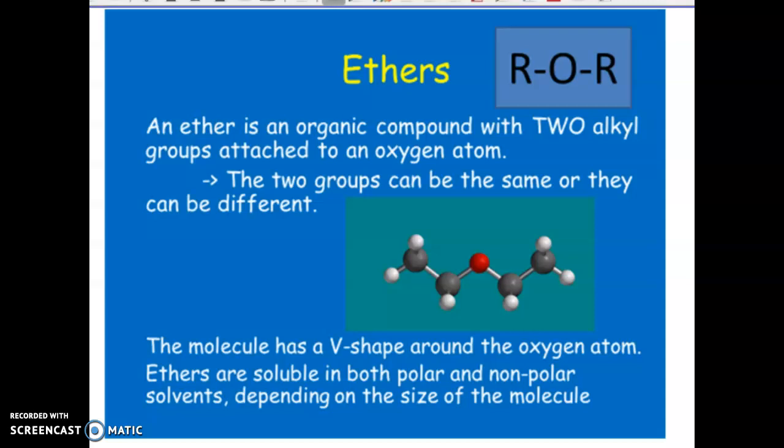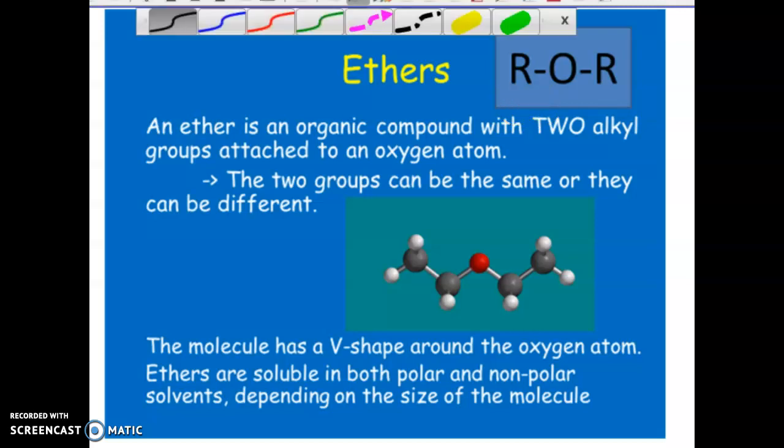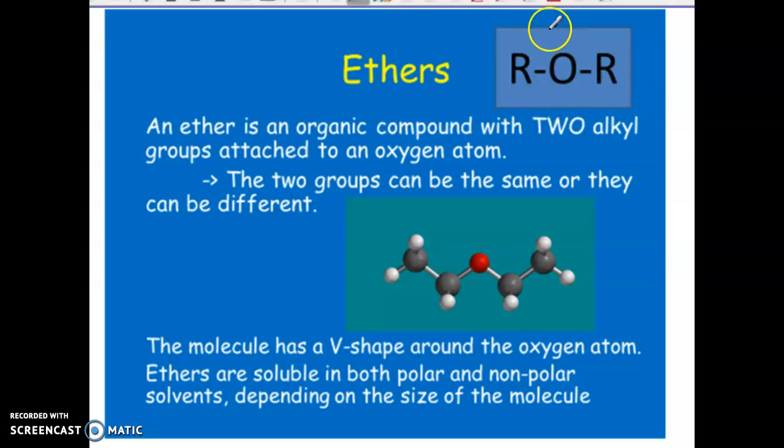Looking at ethers. Ethers is a functional group where it has oxygen and two other carbons on either side. Those carbons can be any length, they can be cyclical, they can be benzene rings. It really can be anything - any carbon, carbon, oxygen in the middle. The two groups can be the same, so I can have R being the same, like a methyl and a methyl, or they can be different, like a methyl and a cyclopropyl. They can be different types of carbon groups.